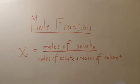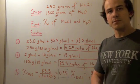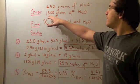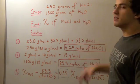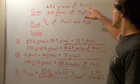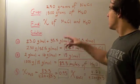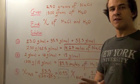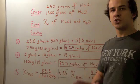Now let's try a problem using mole fraction. The problem tells us that we have 250 grams of sodium chloride and 1500 grams of H₂O. Notice that H₂O is our solvent and NaCl is our solute. Our goal is to find the mole fraction of NaCl and H₂O. The first step is to find the number of moles of sodium chloride and the number of moles of H₂O.